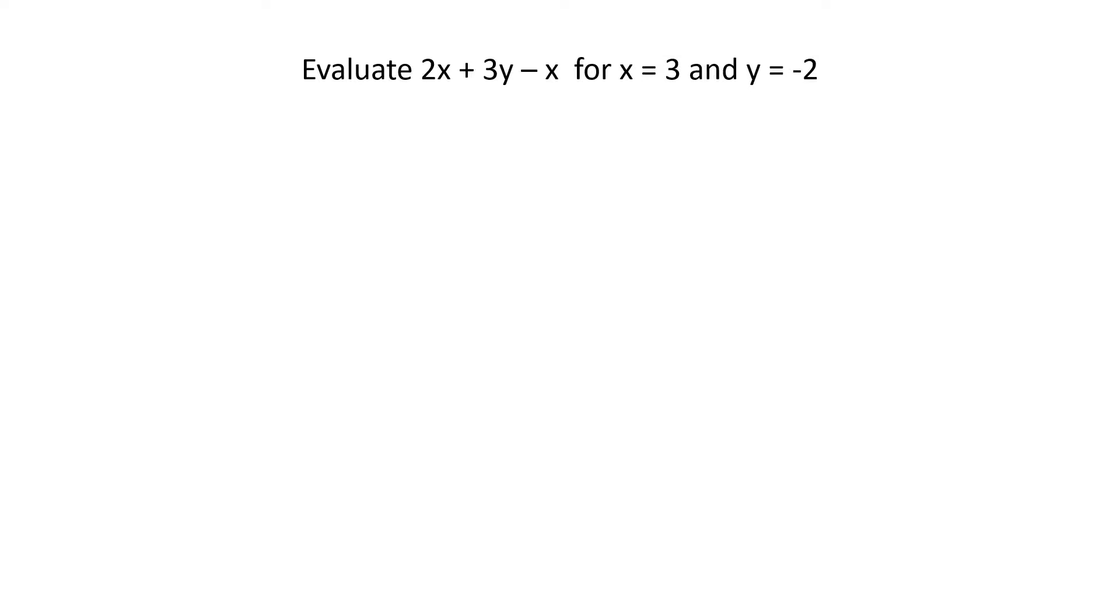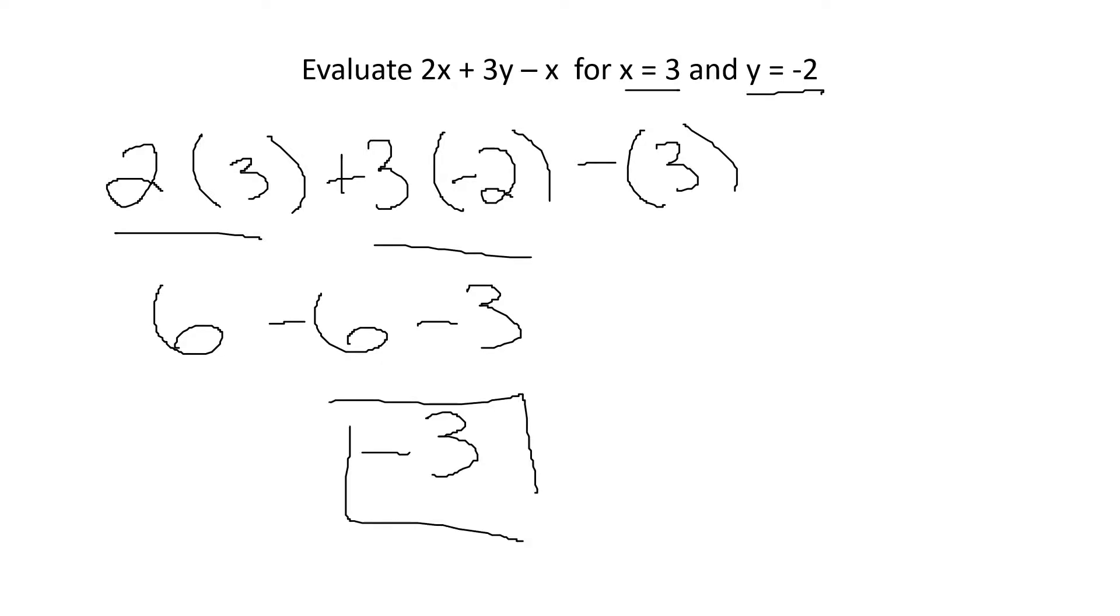So, these guys are pretty simple. We're given a math problem with variables, and then we're given values for the variables. So, all I have to do is plug in 3 for x, negative 2 for y. And it's easy to lose signs in here. So, what I'm going to tell you to do is to use parentheses. You don't lose your operations as easily. And you certainly don't lose your signs as easy. And now, I use order of operations to solve. 2 times 3 is 6. 3 times negative 2 is negative 6. 6 minus 6 is 0. And I'm left with negative 3 as my answer.